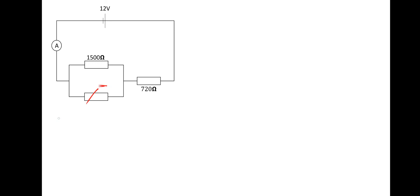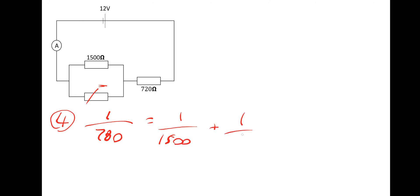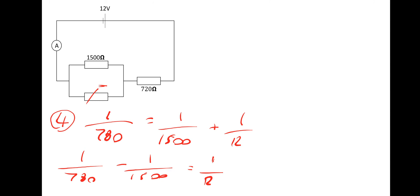To find the thermistor's resistance: 1/780 = 1/1500 + 1/R. Rearranging: 1/R = 1/780 − 1/1500. Taking the reciprocal gives the thermistor resistance of 1625 ohms.